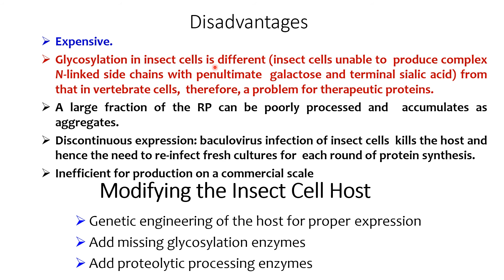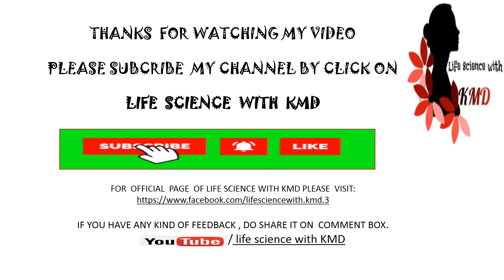Disadvantages: it is expensive; glycosylation in insect cells is different — insect cells are unable to produce complex N-linked side chains with penultimate galactose and terminal sialic acid as in invertebrate cells, making this a problem for therapeutic proteins. A large fraction of recombinant protein can be poorly processed and accumulate as aggregates. Baculovirus infection kills the host insect cells, requiring reinfection of fresh cultures for each round of protein synthesis, which is insufficient for commercial-scale production. Modifications include genetic engineering of the host to add missing glycosylation enzymes and proteolytic processing enzymes.